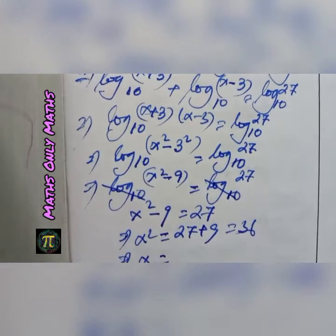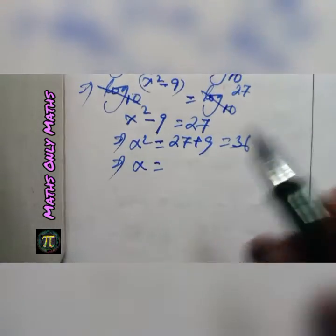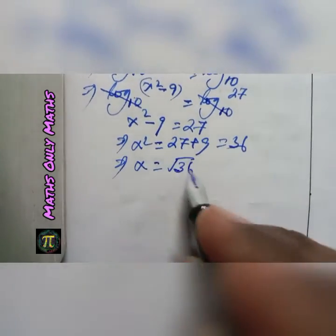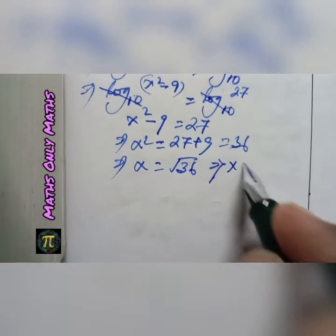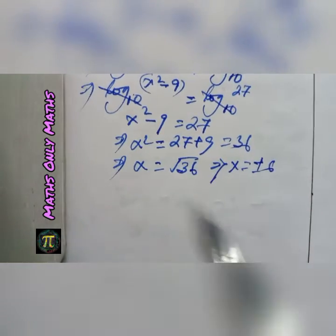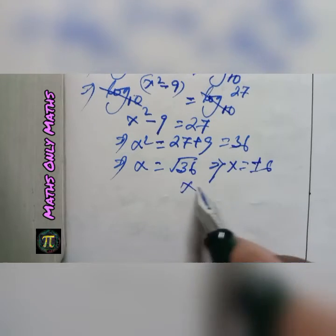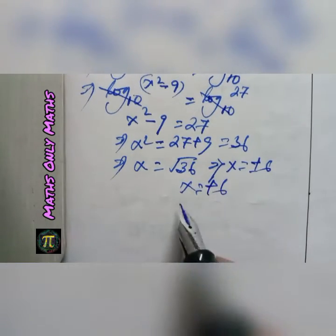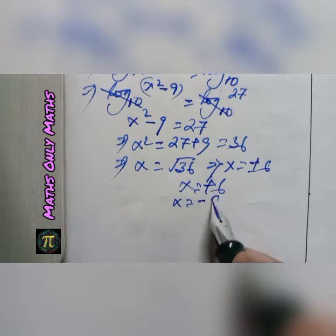x equals square root of 36 or x equals plus minus 6. Now, either x equals plus 6 or x equals minus 6.